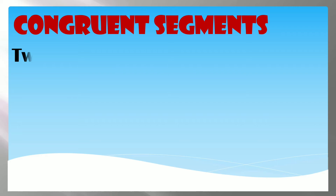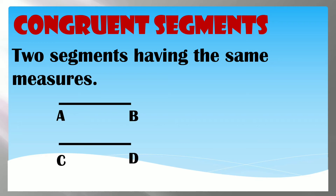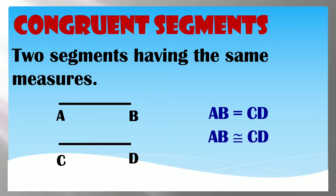Congruent Segments are two segments having the same measure. Segments AB and CD are congruent segments because they have equal measurements. So AB equals CD, and therefore AB is congruent to CD.